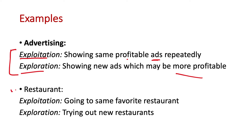Another example: you have some favorite restaurants and you keep going there. But there may be another restaurant in your neighborhood that is much better than your favorite. So you might also want to explore sometimes. The main challenge is how to balance exploration and exploitation, and that is one of the key concepts in reinforcement learning.